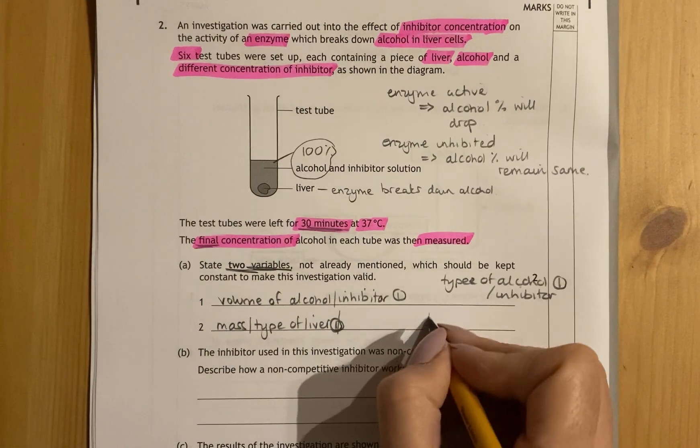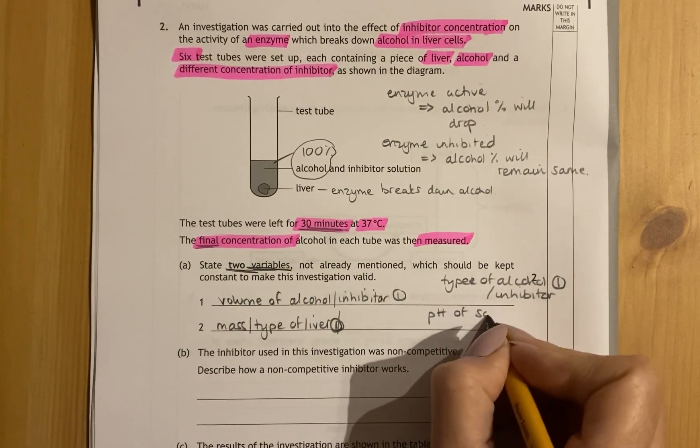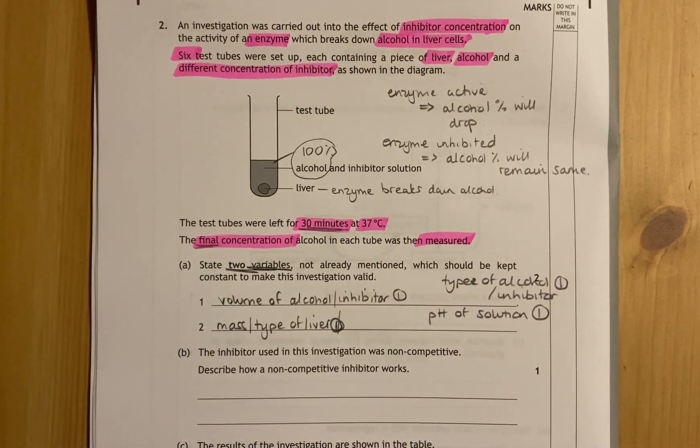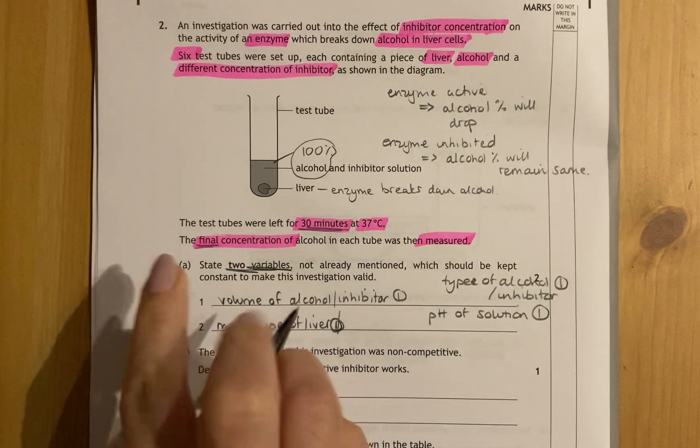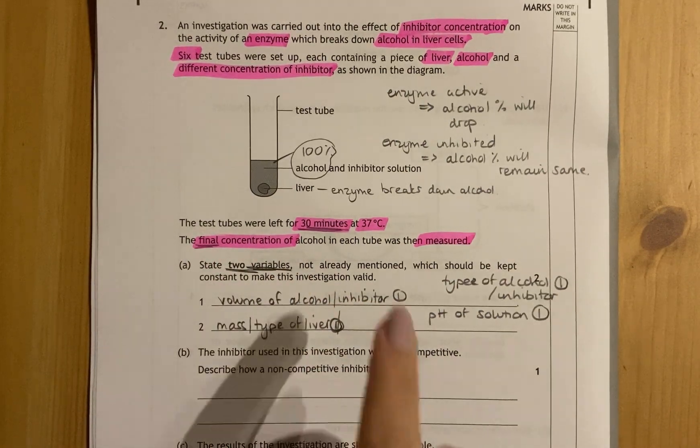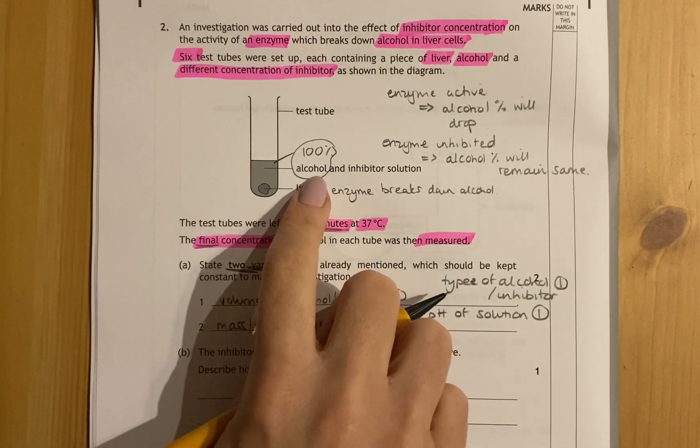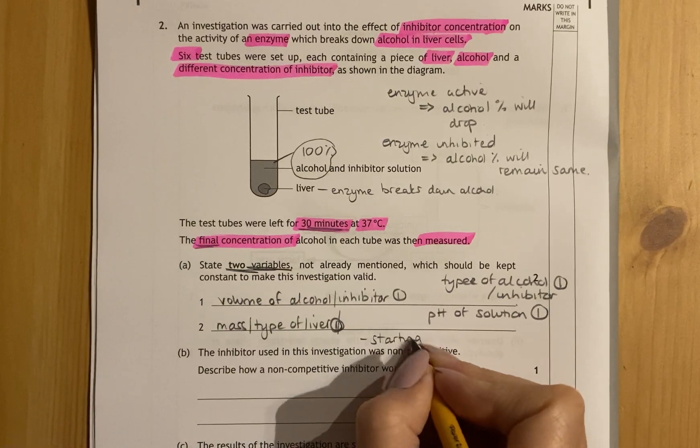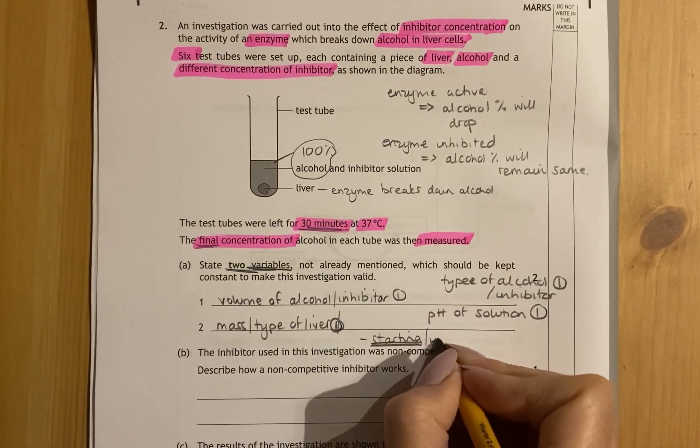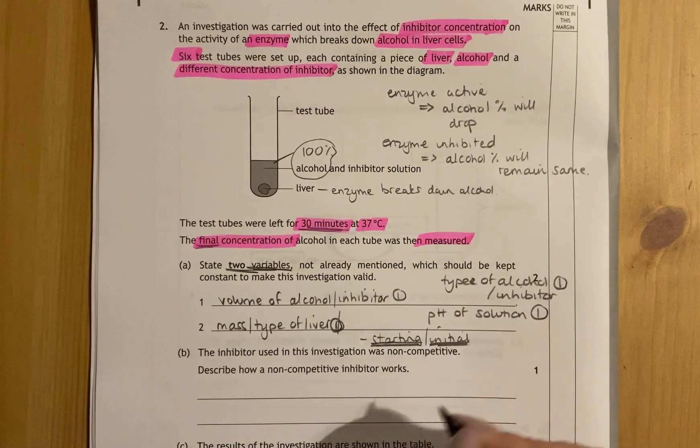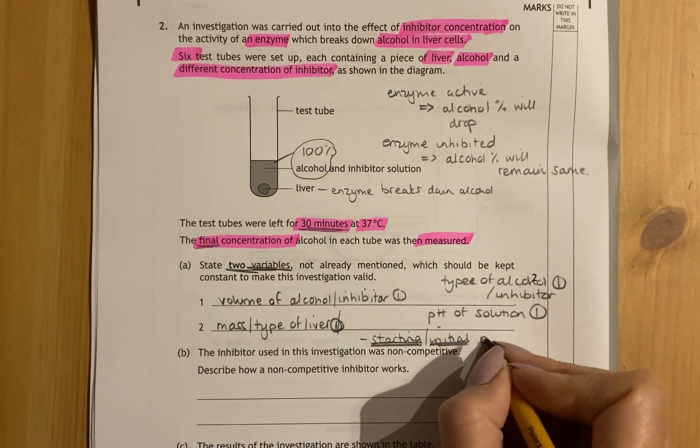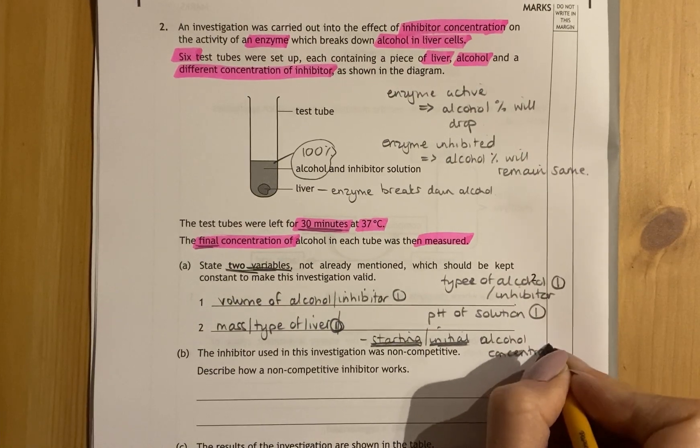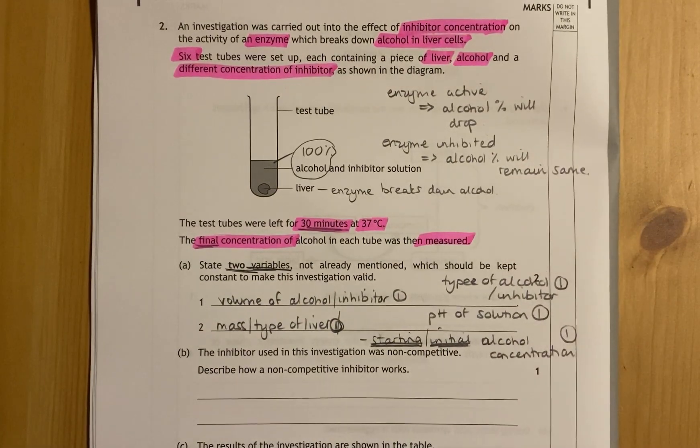They've not said anything about pH, which affects enzyme activity, so that would be important. So the pH of solution, that solution that's in that test tube would be another one. And finally they've said about the final concentration of alcohol being measured, but they've not at any point told you what the starting alcohol concentration was. I've just guessed that. So the starting or initial concentration. I'm underlining these - initial alcohol concentration. So any of these would get you a mark.